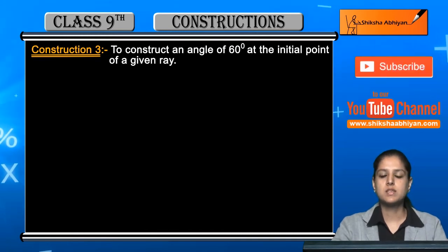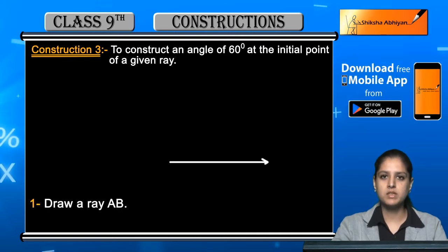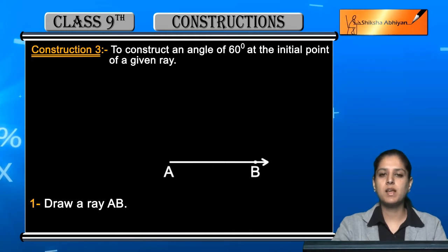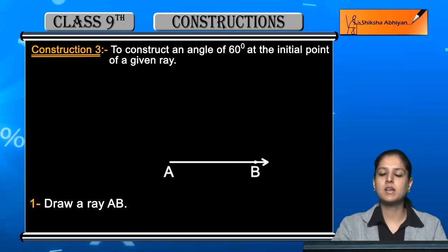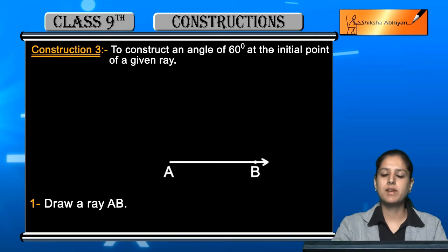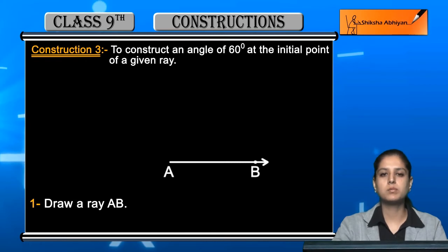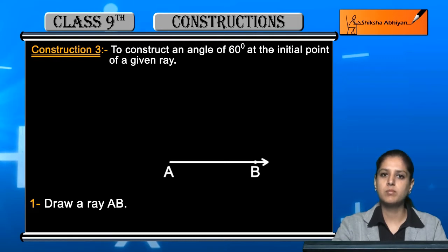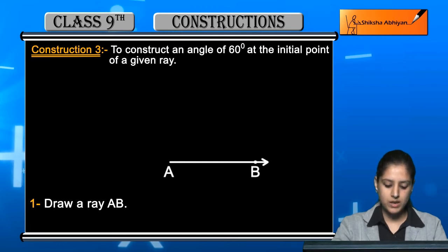पहला step है: to draw a ray. सबसे पहले हमें ray draw करेंगे जिसका नाम दिया है AB। Ray draw करने के लिए पहले एक random line draw कीजिए — scale लीजिए, pencil लीजिए, और एक considerable length की line draw कर लीजिए। उसके एक end पर A लिखिए और दूसरे end पर arrow लगाकर B लिख दीजिए। Generally left side पर point और right side पर arrow लगाते हैं। तो यह ray AB आगई आपके पास।